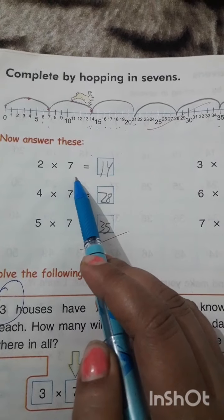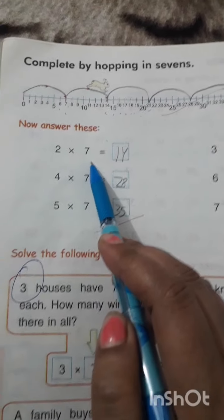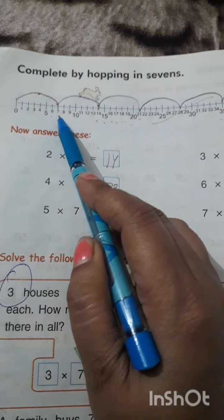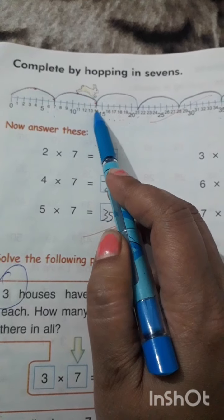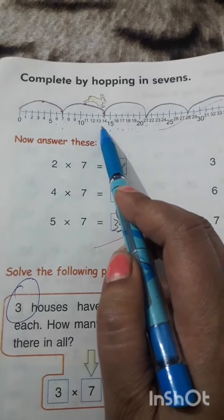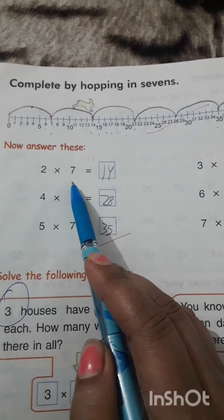2 times 7. 0 to 7 is 1 time. 7 to 14 is 2 times. 2 7s are 14.